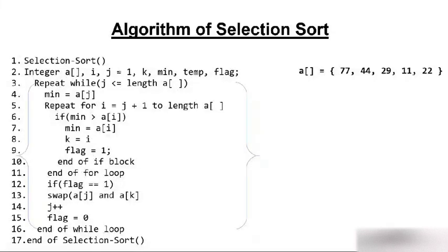This is the while loop block, starting from line 3 and going till line 16. There is an if block starting from line 6 and going till line 10. There is also a for loop starting from line 5 and going till line 11. Keep this scope in mind so our algorithm works correctly.